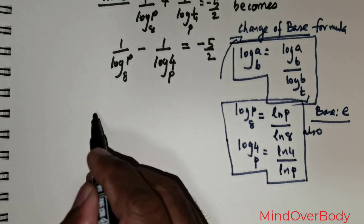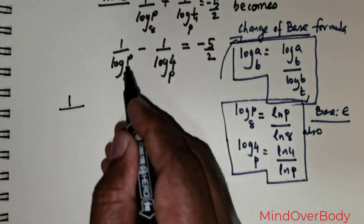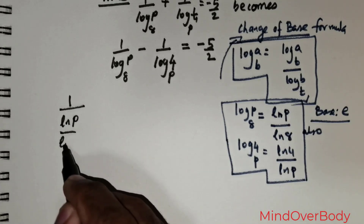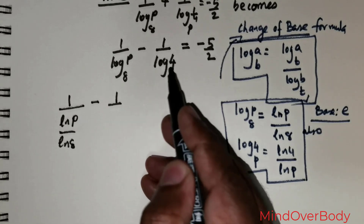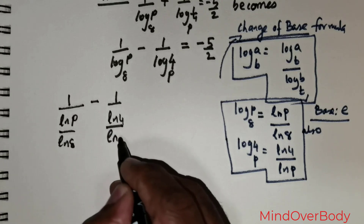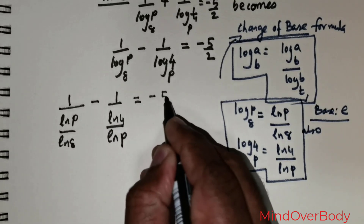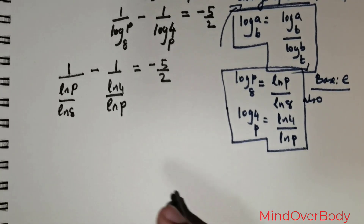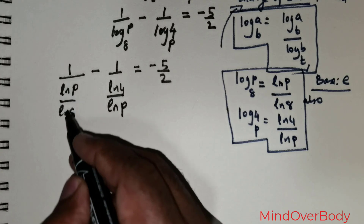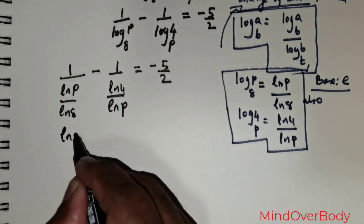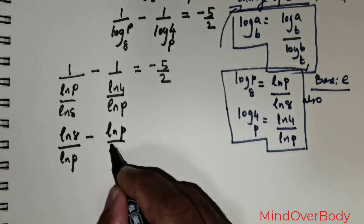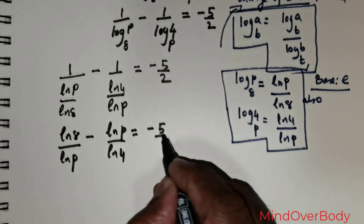Coming back to the question, 1 over log p to the base 8 becomes ln(p) over ln(8). And negative 1 over log 4 to the base p becomes negative ln(4) over ln(p). This equals negative 5 over 2. Using algebra to flip the fractions, we get ln(8) over ln(p), minus ln(p) over ln(4), equals negative 5 over 2.